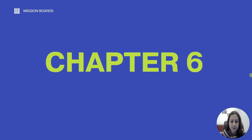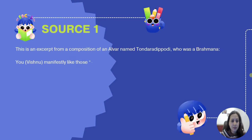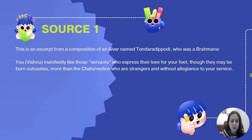Chapter 6 is Bhakti and Sufi traditions. This is the first source that we have taken. This source is basically a composition of an Alvar saint named Tundaradipodi, who was a Brahmin, and this is what he has written about how one can express love towards Lord Vishnu.